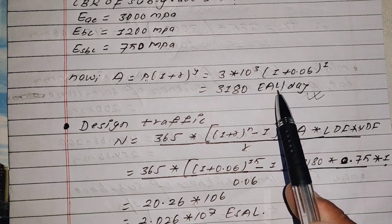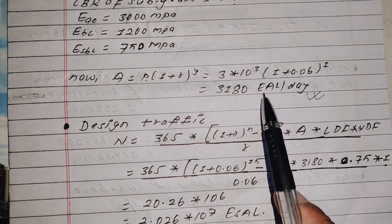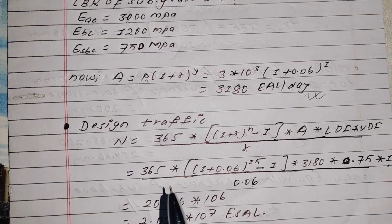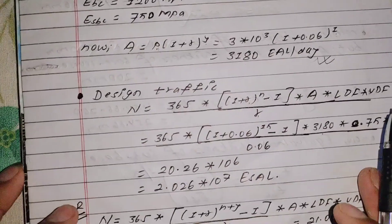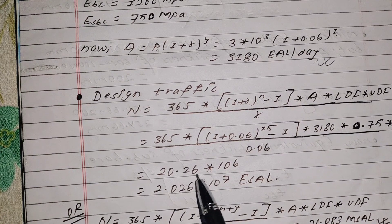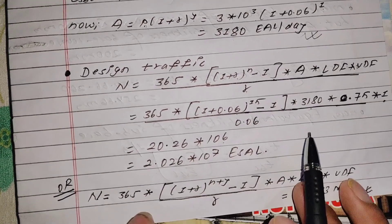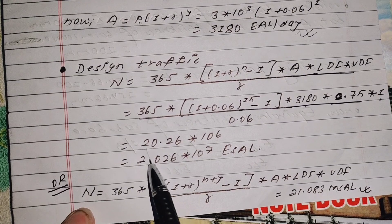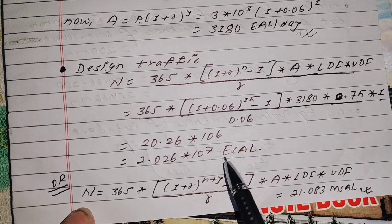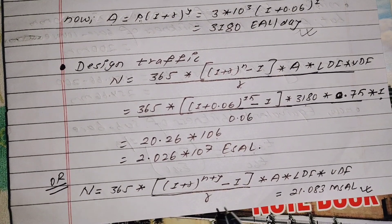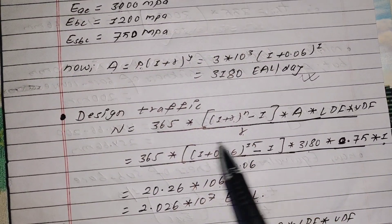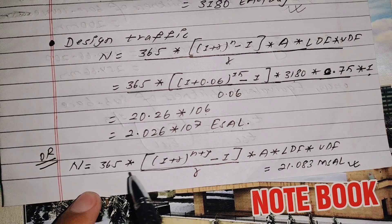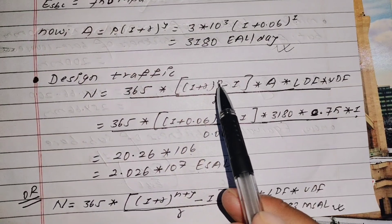The calculation gives 20.26 × 10⁶. So the design traffic N = 2.026 × 10⁷ equivalent single axle loads. Using the formula for design traffic with the values plugged in, we get N = 2.026 × 10⁷ ESAL.